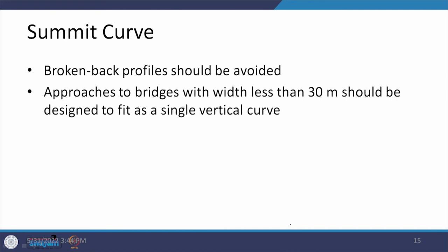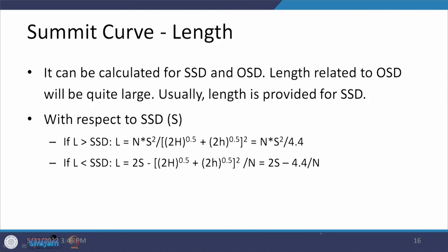For summit curves, broken back profiles should also be avoided, and approaches to bridges with spans less than 30 meters should be designed to fit as a single vertical curve. The length of the summit curve is mostly calculated for SSD but can also be calculated for OSD conditions. At 100 km/h, SSD is roughly 180 meters while OSD is approximately 640 meters — so OSD-based lengths are significantly longer. Mostly we try to ensure the minimum SSD, but OSD can also be provided.